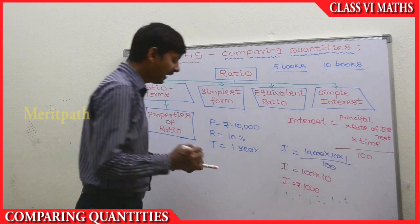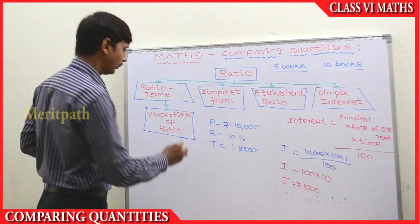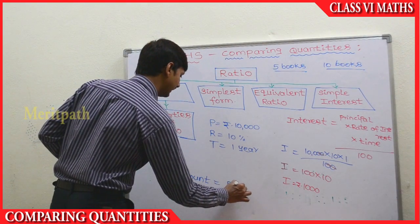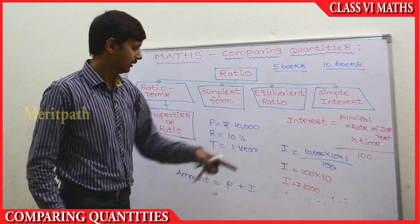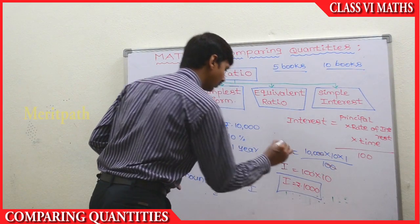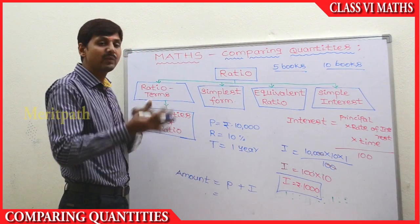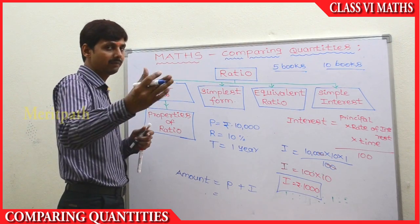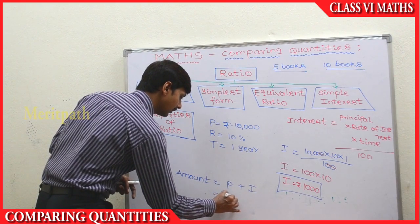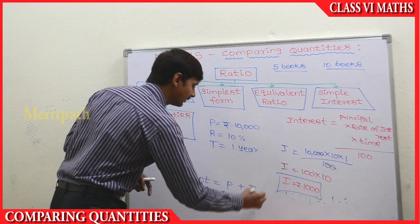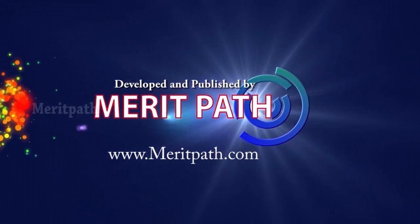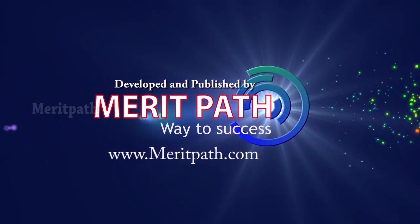The total amount we need to pay is equal to principal plus interest. Principal is 10,000 rupees and interest is 1,000 rupees. So the total amount is 10,000 plus 1,000, which is 11,000 rupees.